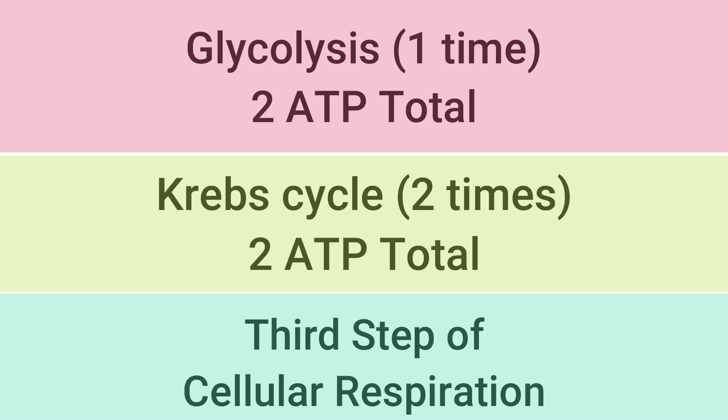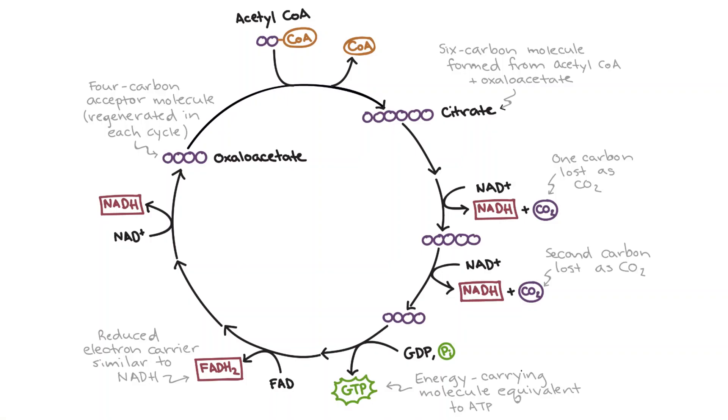But if the purpose of cellular respiration is to generate energy, why do both glycolysis and the Krebs cycle only produce two ATP each? Well, these two ATP each may not seem like a lot,